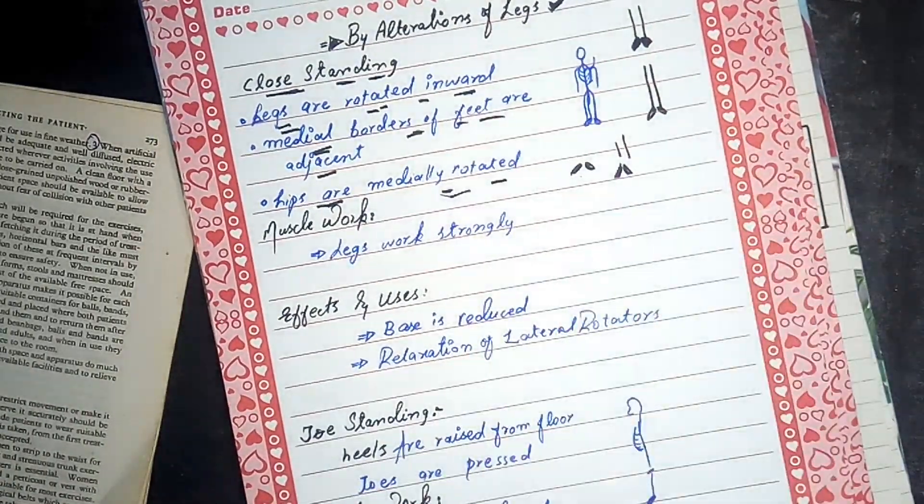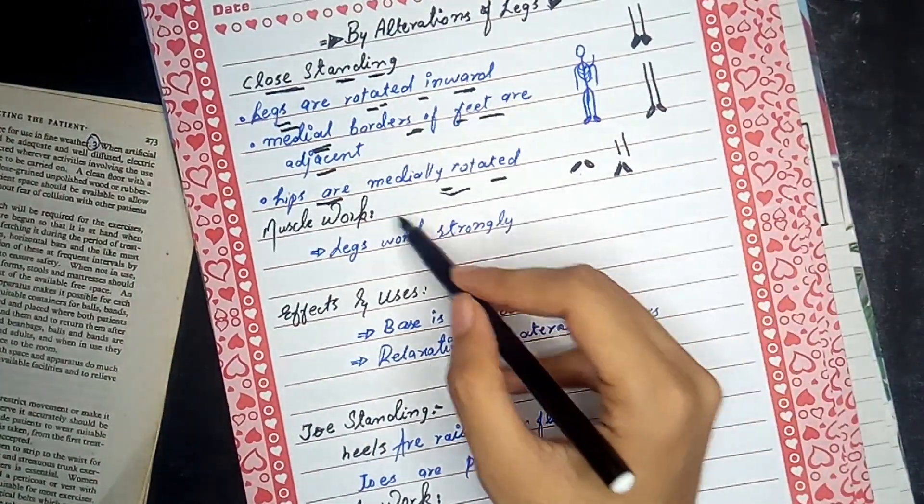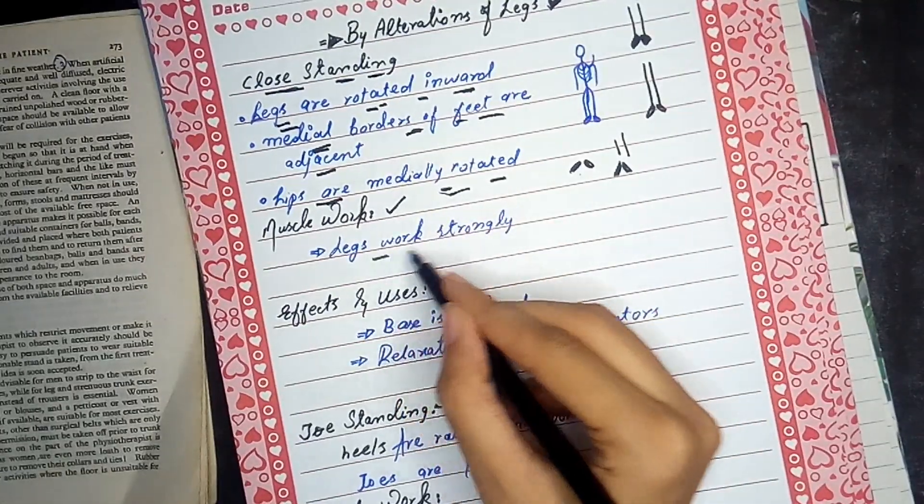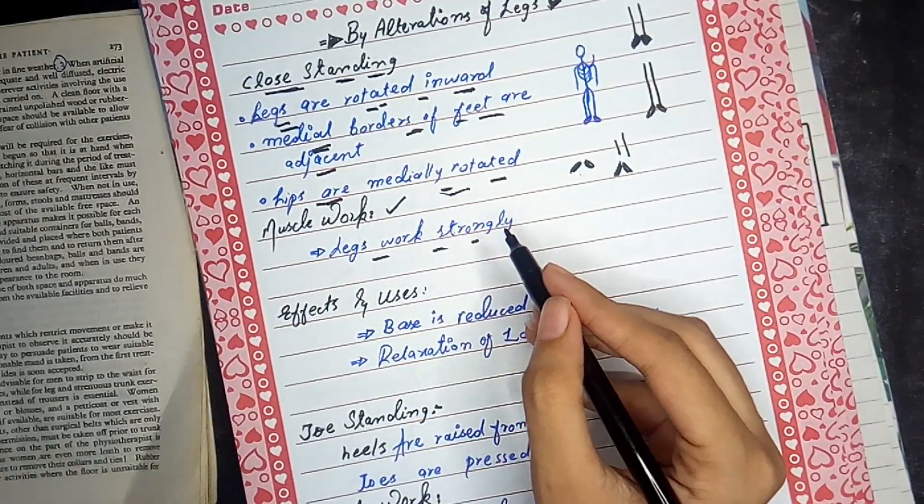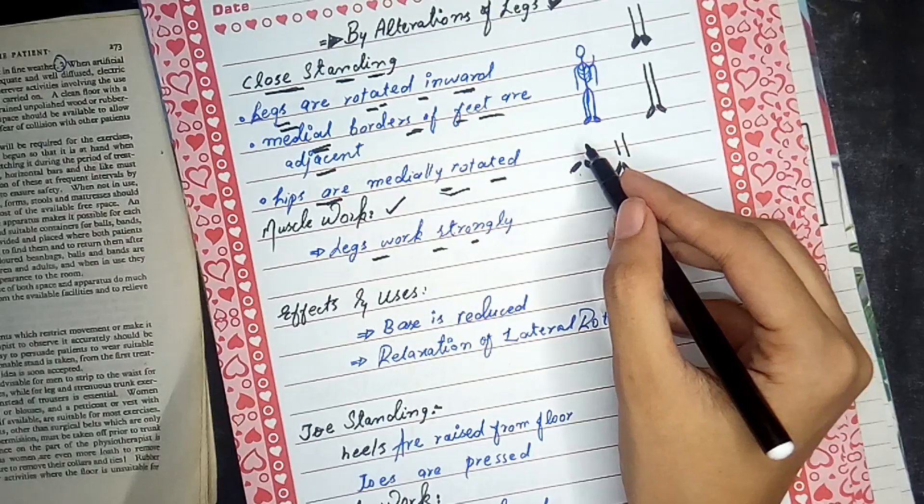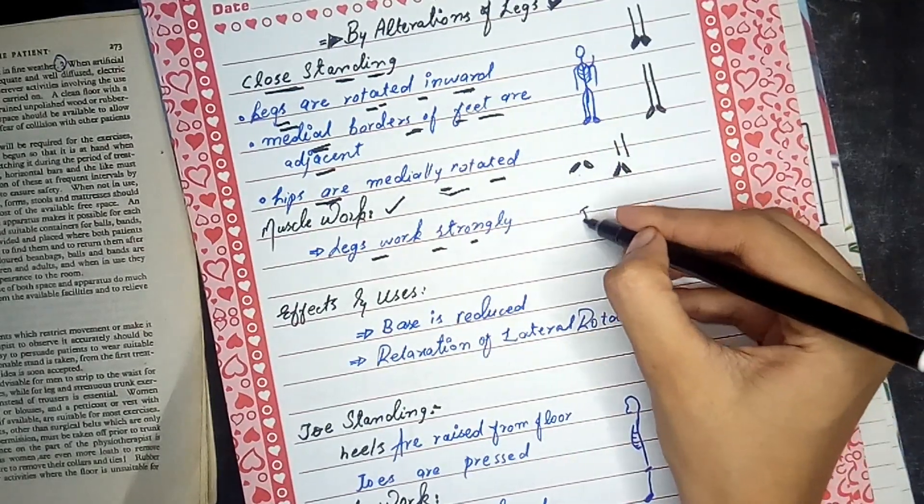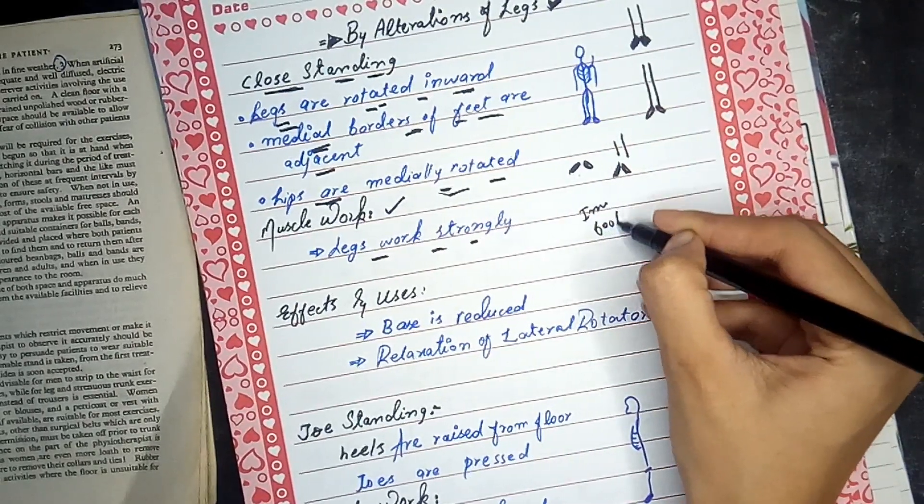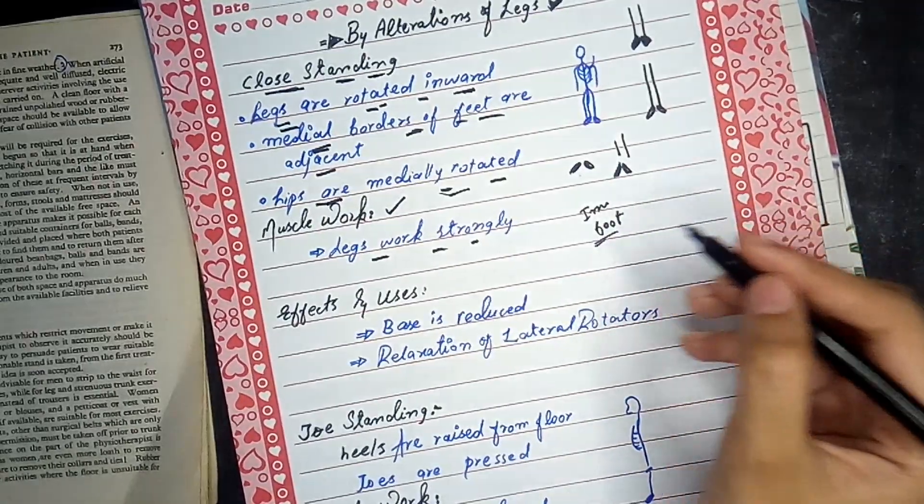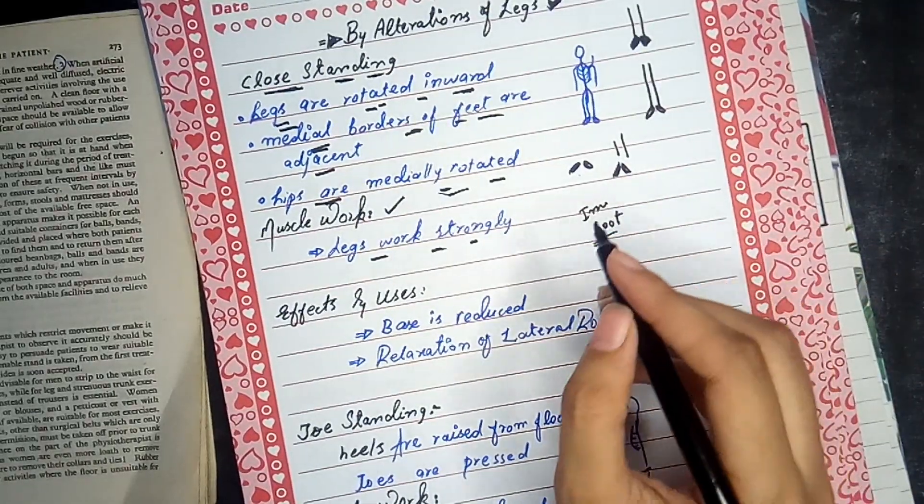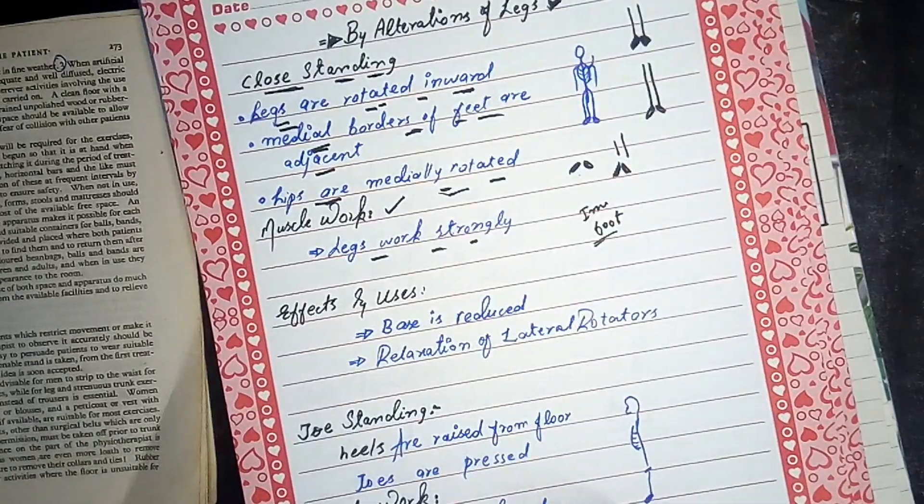You can also know the position. What is the muscle work? Our legs are strongly working to maintain this position because our legs have inverted rotation. We need a full position to keep the foot, a tight position. So you can get the muscle work with this position.